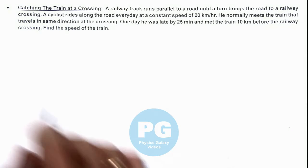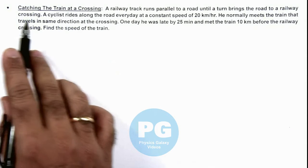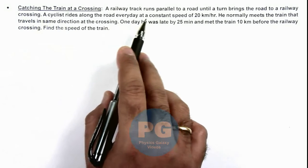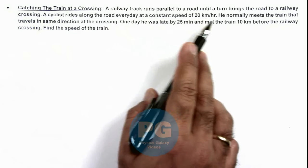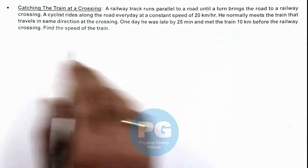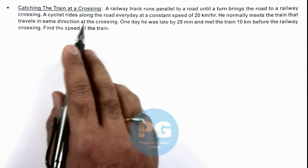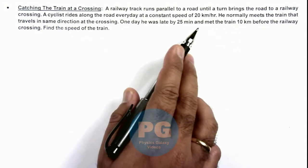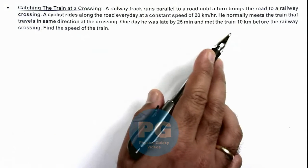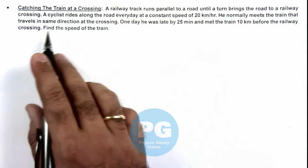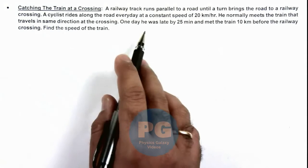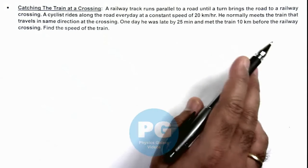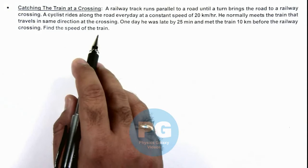In this illustration, we'll see a situation of catching the train at a crossing. We are given that a railway track runs parallel to a road until a turn brings the road to a railway crossing. A cyclist rides along the road every day at a constant speed of 20 kilometers per hour. He normally meets the train that travels in the same direction at the crossing. One day he was late by 25 minutes and met the train 10 kilometers before the crossing. We are required to find the speed of the train.